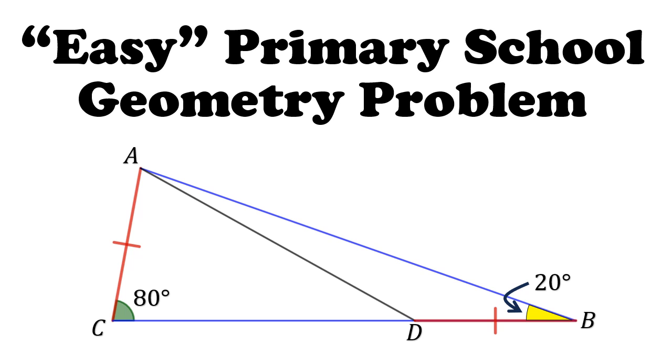We are given a triangle ABC, such that angle ACB is 80 degrees and angle ABC is 20 degrees. Furthermore, we are told that the length of AC is equal to the length of BD. Can you find the value of the angle ADC?